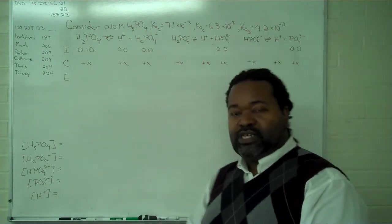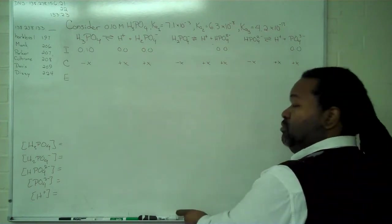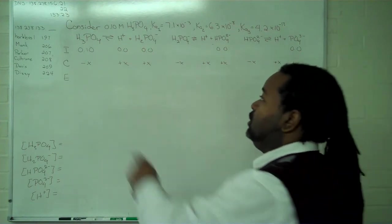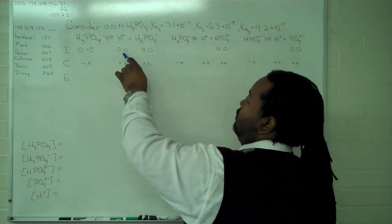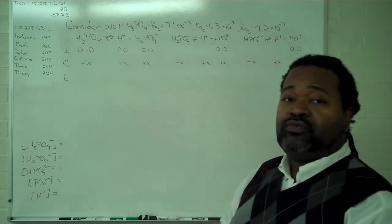So in our very first step, we complete the ICE table. Much of this is already written out. But we have our initial concentration of 0.1 molar. We have no hydrogen and no H2PO4-.